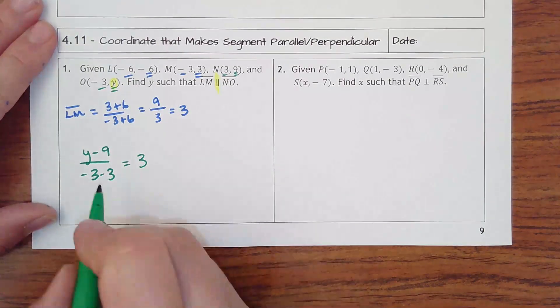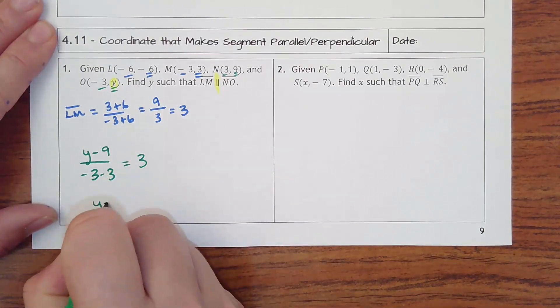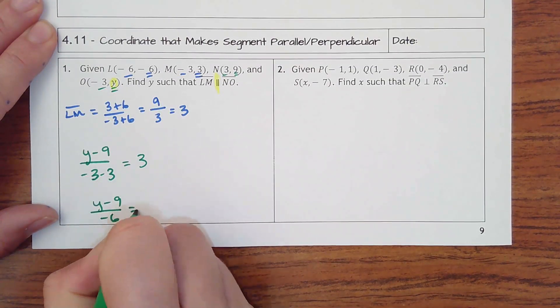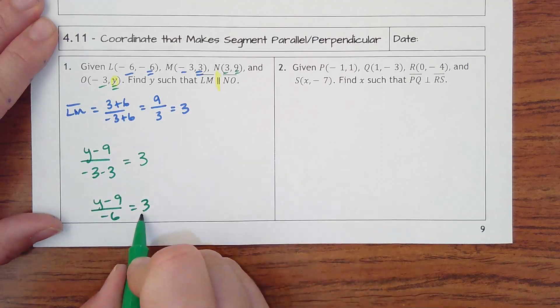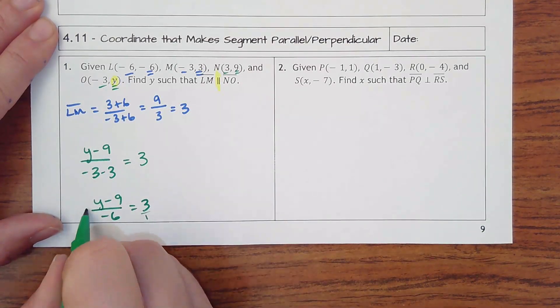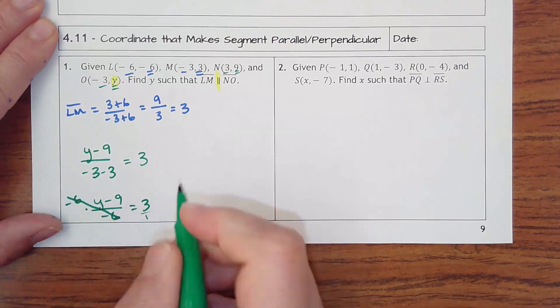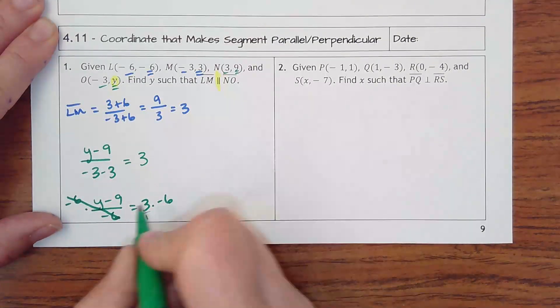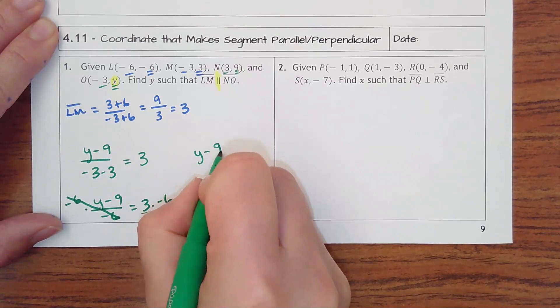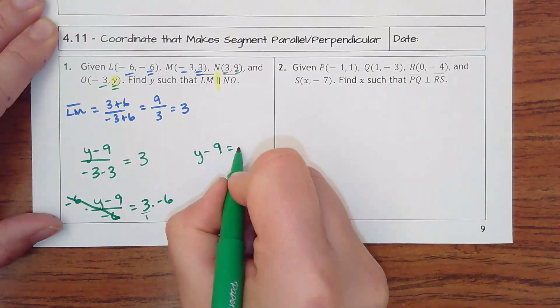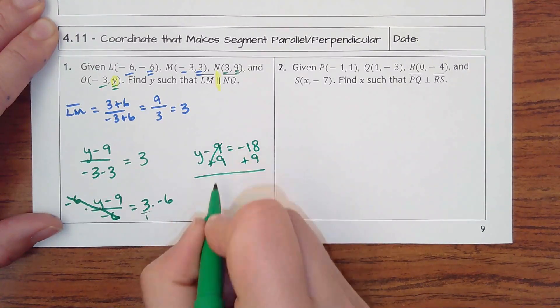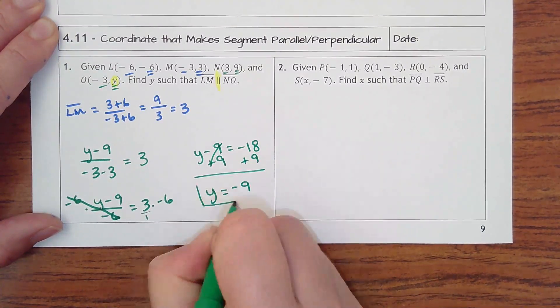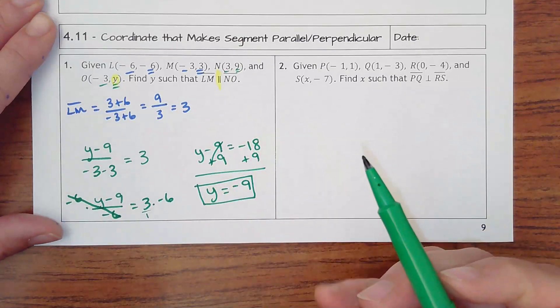And so I'm going to simplify the bottom. So I've got Y minus 9 over negative 6 equals 3. And then what I've created is a multi-step equation, or you can see it as a proportion, because this is over 1. Proportions you cross multiply, or think about them multiplying by this negative 6. So then I get Y minus 9 equals negative 18. And then all I have to do is add 9. So Y must be negative 9. And that's all it wanted, was just a coordinate.